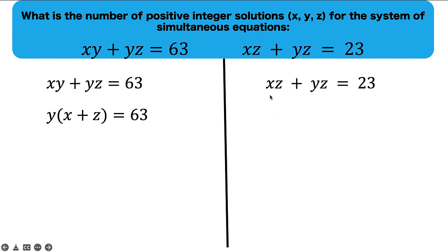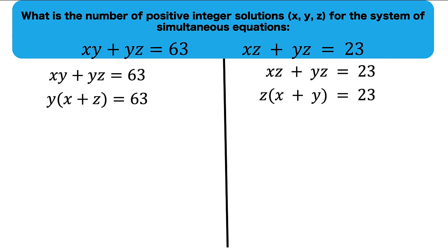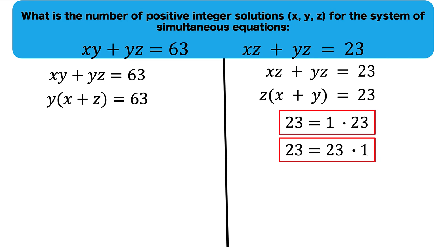Let's go to the second equation. There is a common factor z, so let's factor out z to arrive at z times the quantity x plus y equals 23. Now notice that 23 is a prime number. Its factors are 1 and 23. It's either we write it as 1 times 23 or 23 times 1 by commutative property of multiplication.